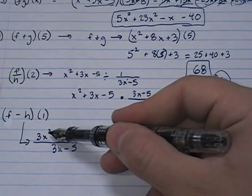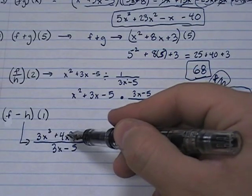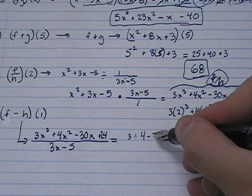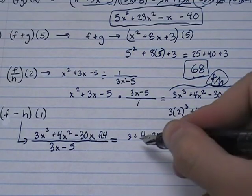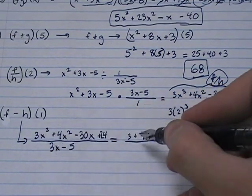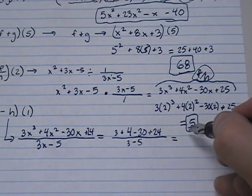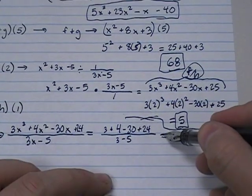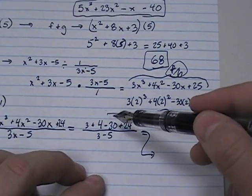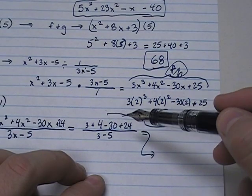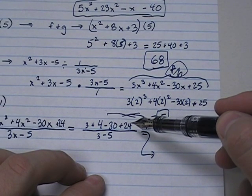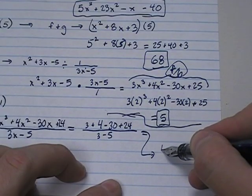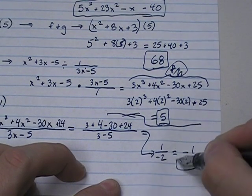1 cubed is 1, so 1 times 3, you get 3. Same thing here, 1 squared is 1, 1 times 4 is 4. Here, negative 30 times 1 is negative 30, and then plus 24 over 3 times 1 is 3, so 3 minus 5. 3 plus 4 plus 24 is a total of 31. 31 minus 30 is 1, and 3 minus 5 is negative 2. So I get 1 over negative 2, which is the same as negative 1 half.